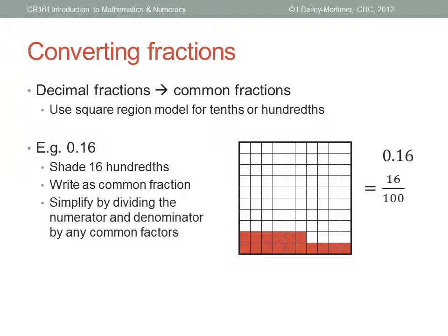Okay, now simplify the fraction if possible. Do sixteen and a hundred have any common factors? Yes, four. Divide both top and bottom by four, to get four twenty-fifths. This is zero point one six, as a common fraction in simplest form.